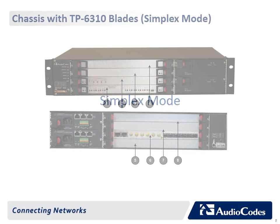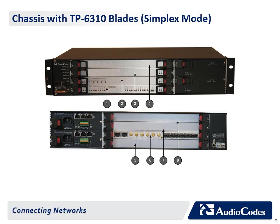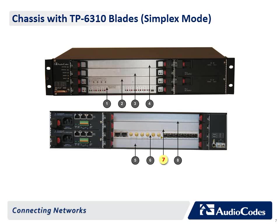In Simplex mode, the chassis with TP6310 blades hosts the following: (1) Front panel slot 1, TP6310 blade; (2) Slot 2, synchronization and alarm blade; (3) Slot 3, covered with a blank panel; (4) Slot 4, covered with a blank panel; (5 and 8) blank panels covering unoccupied slots; (6) Rear panel slot 2, RTM6310 providing STM1, OC3 or T3 interfaces and dual Gigabit Ethernet interfaces; (7) Slot 3, covered with a blank panel.